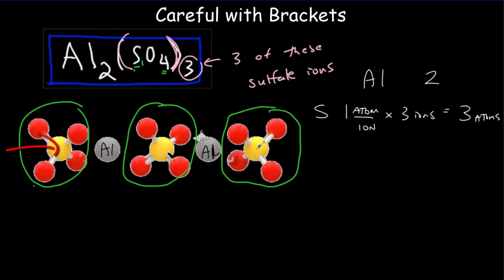You can see those, the three yellows here. One, two, three. And then for the oxygen, we've got four atoms per ion. And then we've got three of the ions. So we've got a grand total of 12 atoms of oxygen.